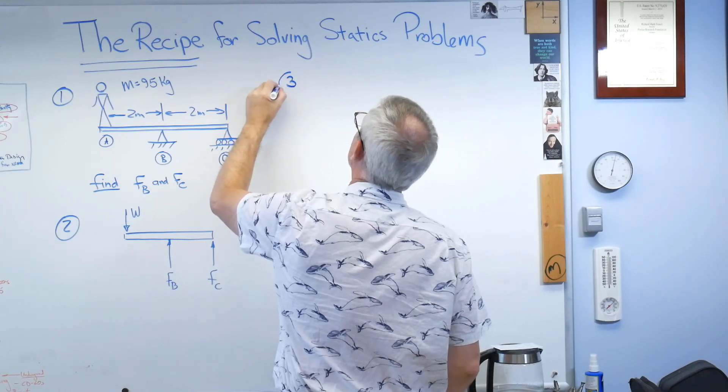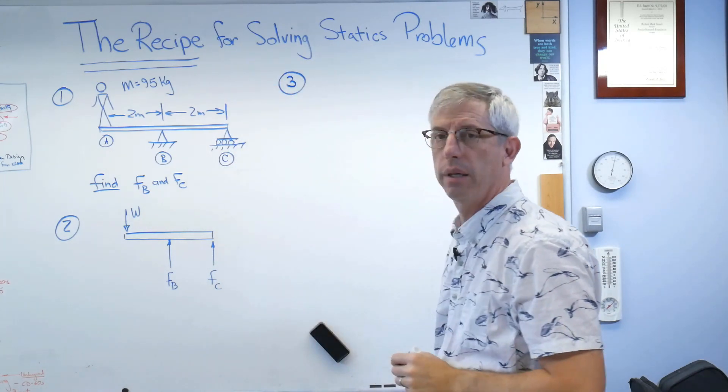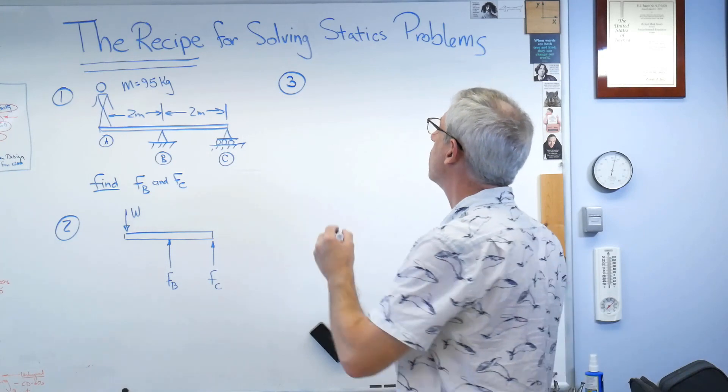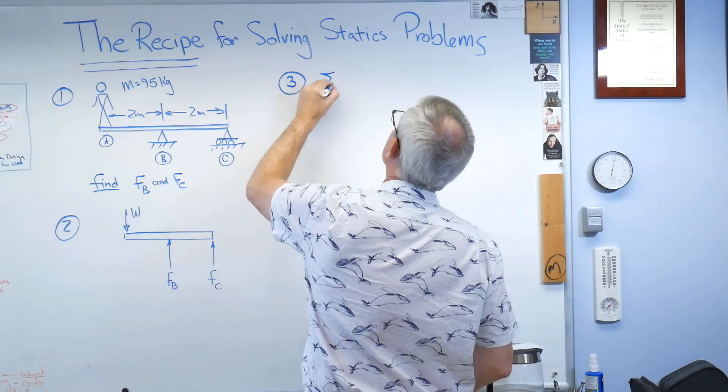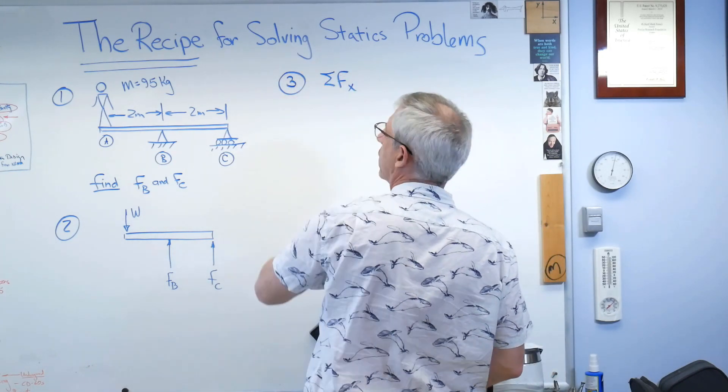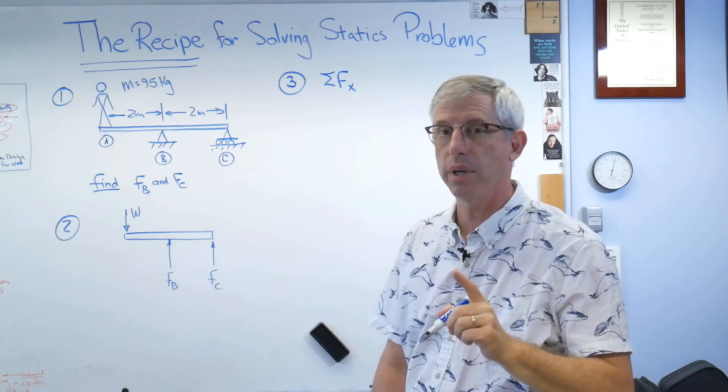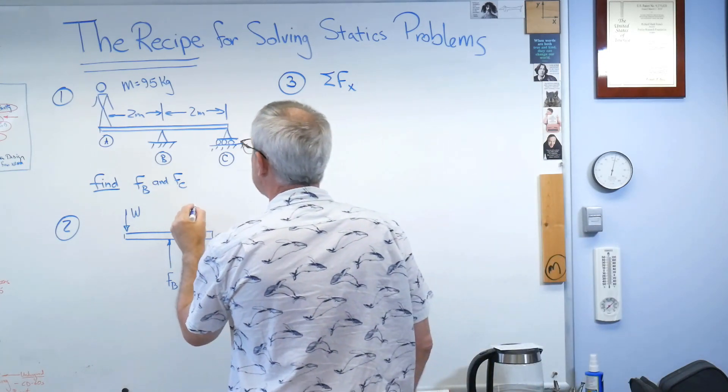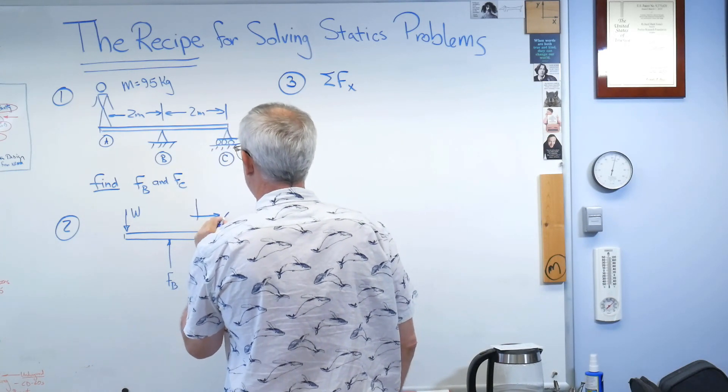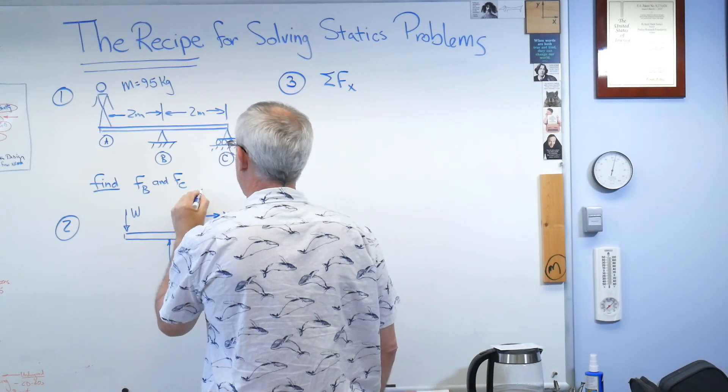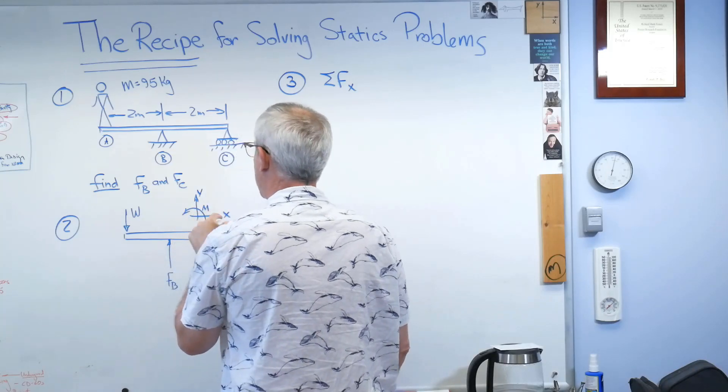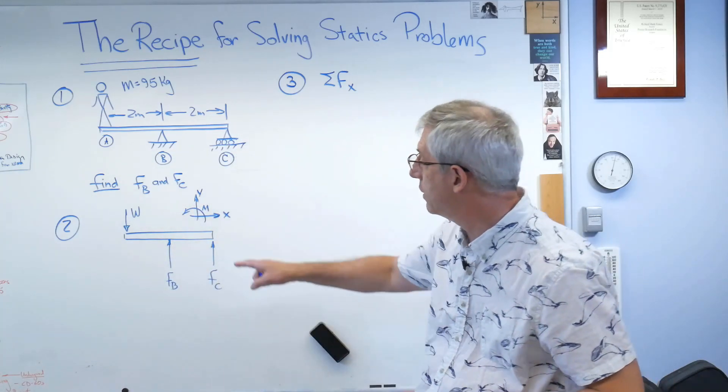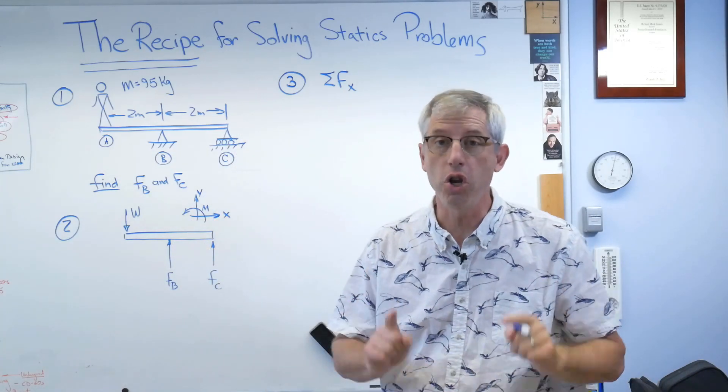Three. All right. Write out the equations of static equilibrium. Well, sum of the forces in the x direction. Whoa, that's not a free body diagram because it doesn't have a positive sign convention on it. Let's fix that. Okay, there's x, y and the moment. Now, is this the origin of the coordinate system? No. This is just the positive senses of all your directions.